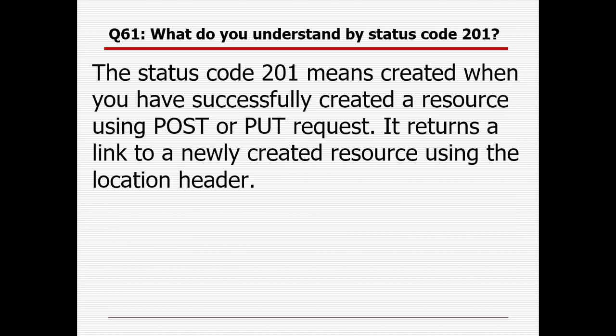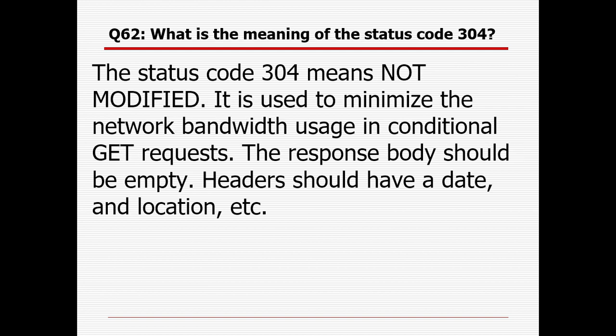What do you understand by status code 201? Whenever you send different requests using GET, PUT, PATCH, DELETE, or POST, every time Postman will provide some response. Each response will have a description and a code. The status code 201 means Created — when you have successfully created a resource using a POST or PUT request, it returns a link to the newly created resource using the Location header.